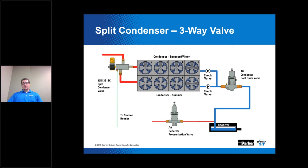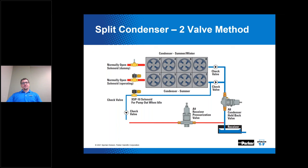In order to provide equal flow to both condenser circuits during full condenser mode or summer operation, you need another check valve at the summer/winter condenser outlet to introduce identical pressure drop through both halves. Without that check valve on the top half during high ambient when feeding refrigerant to both halves, you would not have identical pressure drop and would get more refrigerant flow to the summer-only condenser.